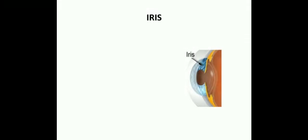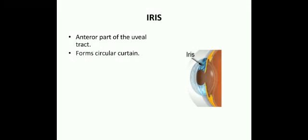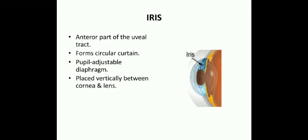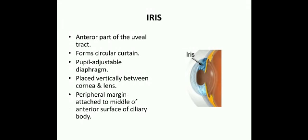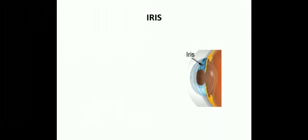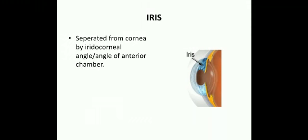Next is the iris, the anterior part of the uveal tract. It forms a circular curtain, and the gap in the iris is known as the pupil, which acts as an adjustable diaphragm. The iris is placed vertically between the cornea and the lens. The peripheral margin is attached to the middle of the anterior surface of the ciliary body. It is separated from the cornea by the iridocorneal angle or the angle of the anterior chamber. The central free margin rests on the lens.